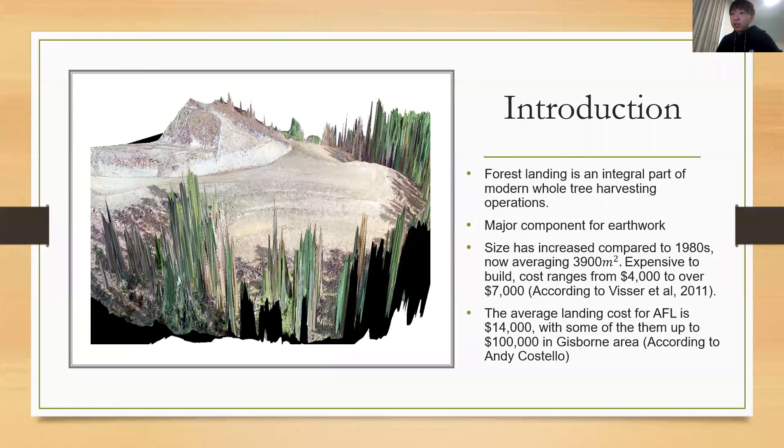First, a little bit of introduction. Forest landing is an integral part of modern whole tree harvesting operations. It is a major component for earthwork. The landing size has increased significantly compared to what it was in the 1980s, now averaging 3,900 m2. They are expensive to build.